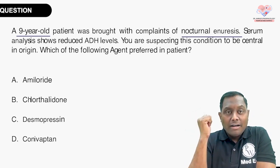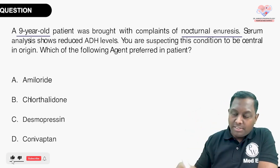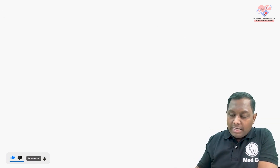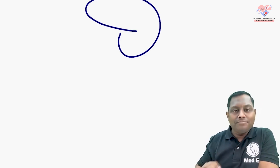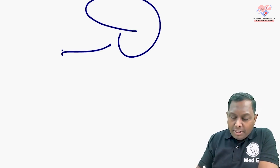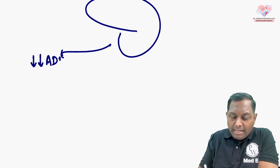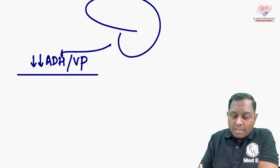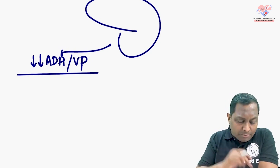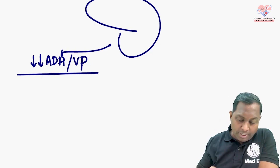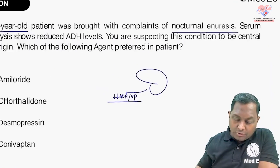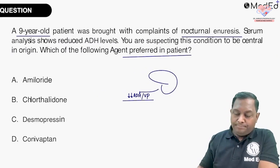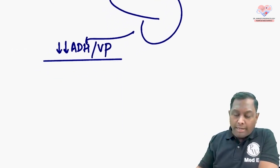Serum analysis shows a reduced ADH level, so we are suspecting this condition to be central in origin. ADH is reduced — where did the ADH go? It came less from the brain. ADH is anti-diuretic hormone, also given the name vasopressin. Now, which agent is preferred here?